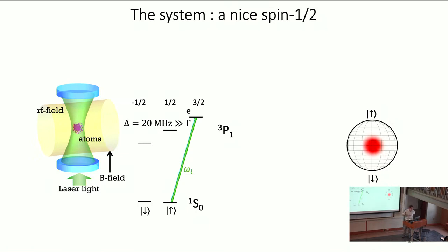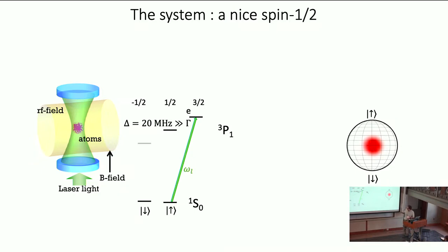Ytterbium-171 is a fermion, and as a fermion it has a nice feature: the ground state is a spin-one-half system, making it a nice playground for quantum mechanics. There is also a transition with a linewidth of 200 kHz — not ideal for optical clocks, but still pretty narrow. Importantly, the ground state is a nuclear spin. If you apply a strong magnetic field, you get a very small Zeeman splitting — in our case, 14 Gauss gives a splitting of 10 kHz (1.4 mT). On this transition, the splitting is mostly electronic spin at 20 MHz, much larger than gamma, giving us an effectively closed transition — we can think of our system as a spin-one-half three-level system.